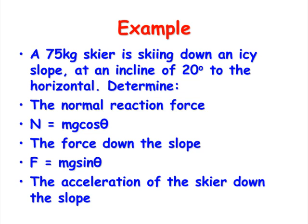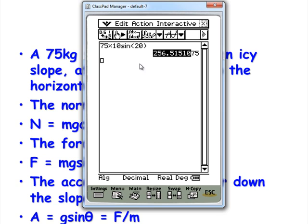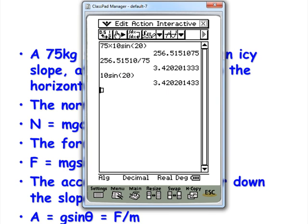And the acceleration of the skier down the slope. So we have A equals G sin theta, which is also F divided by M. So we've got two possibilities. We can do the previous question, that value divided by M, which was 75. We get 3.42 meters per second. Alternatively, we can go G sin theta, and we get exactly the same value for our acceleration.